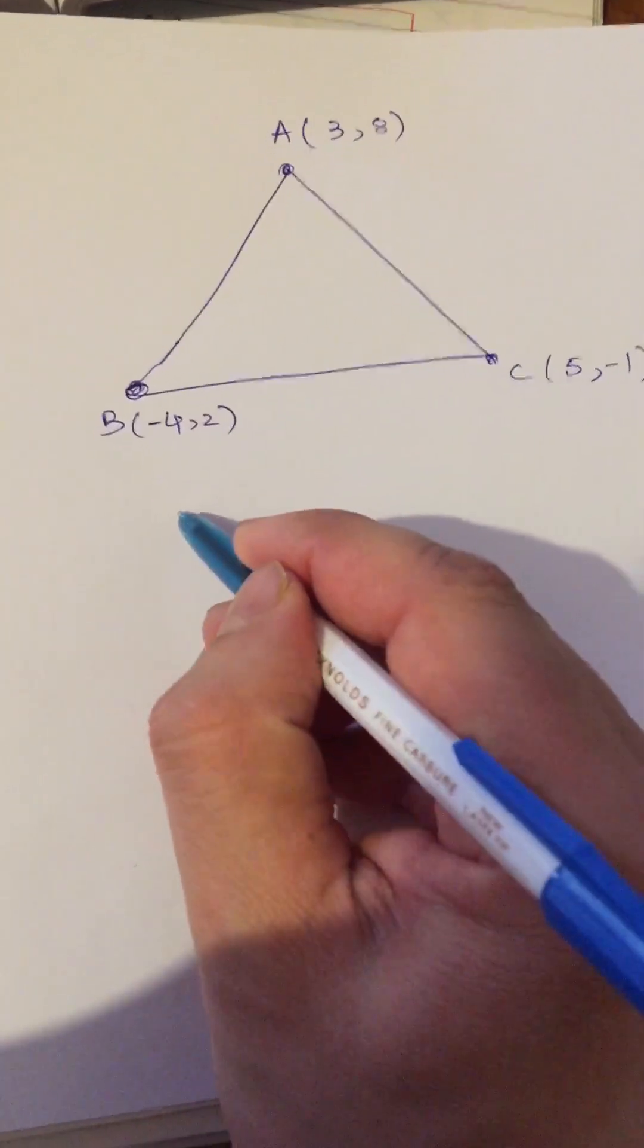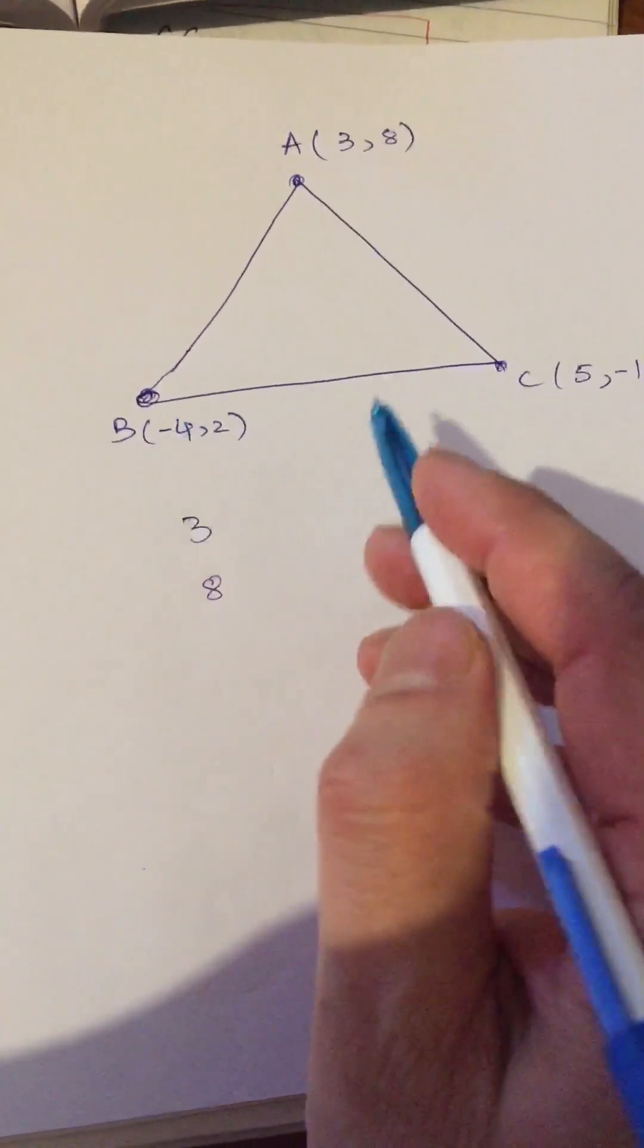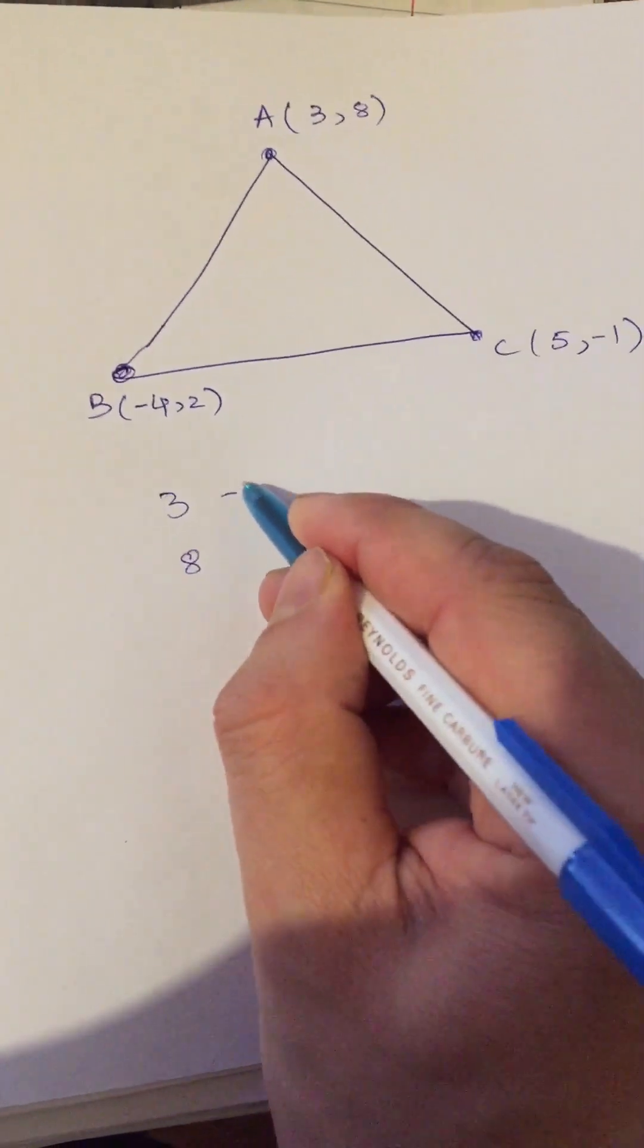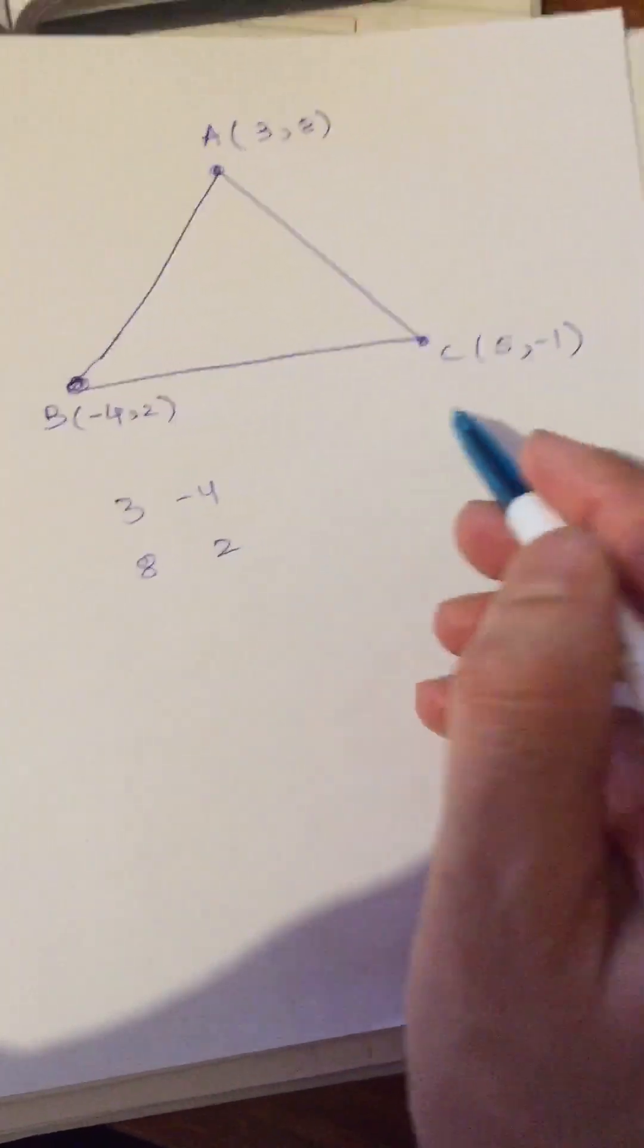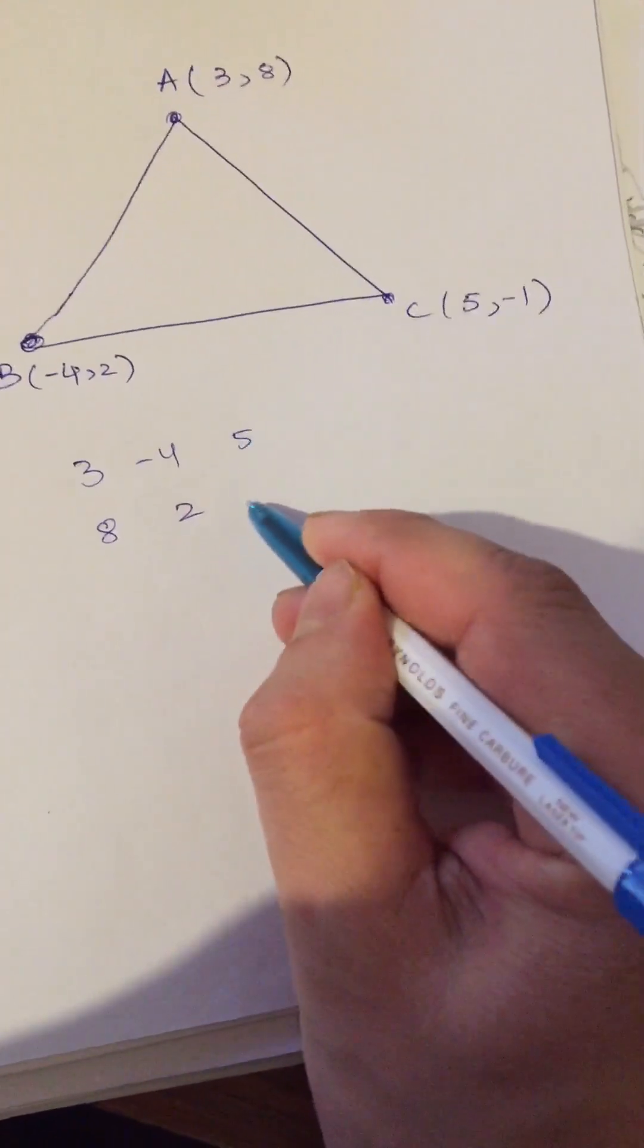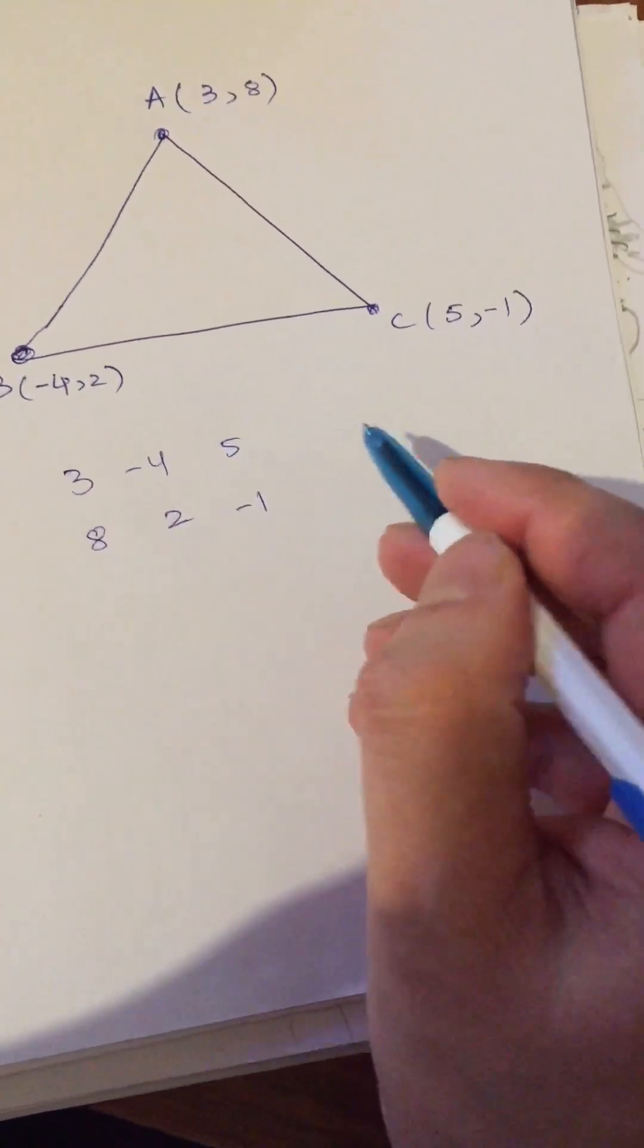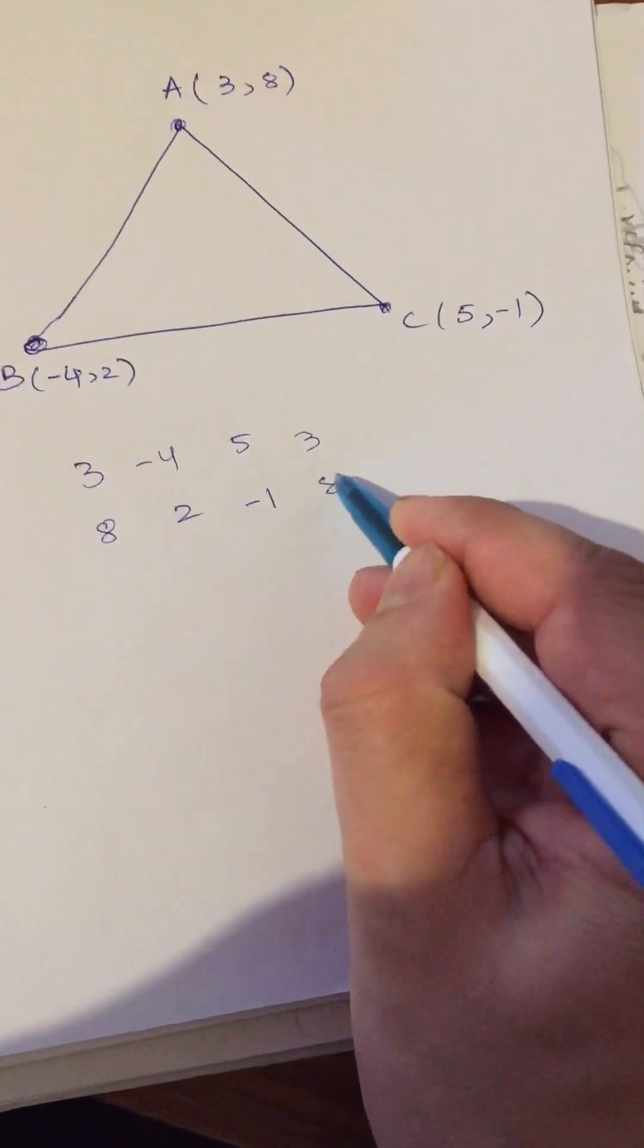You have to write the coordinates of A here like this: 3, 8. Then coordinates of B: it is minus 4, 2. Then the coordinates of C: it is 5, minus 1. Lastly, what do you have to do? These coordinates here: 3, 8.